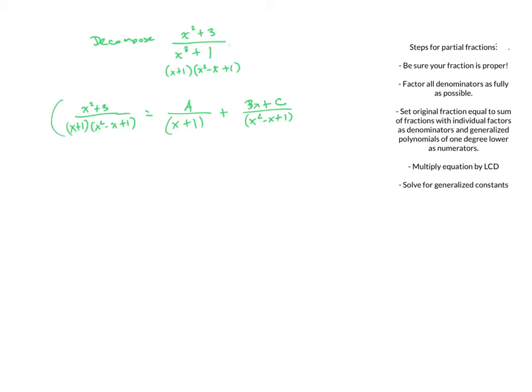Multiplying both sides by the LCD, the left side gives x squared plus 3, and the right side gives A times x squared minus x plus 1, plus Bx plus C times x plus 1. Using the quick substitution method here would only let us find A, so I'll show the longer, more complete method for this example.